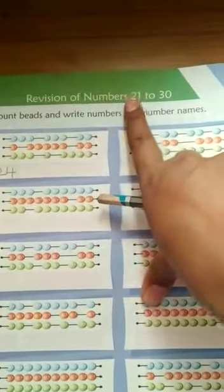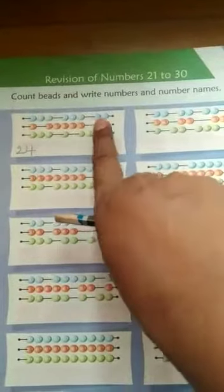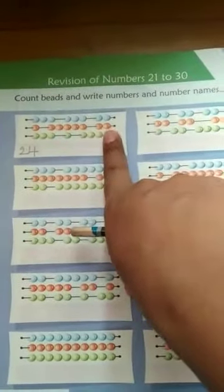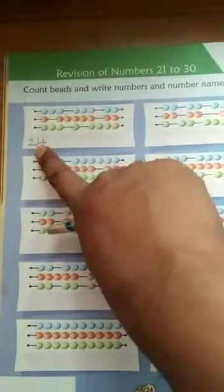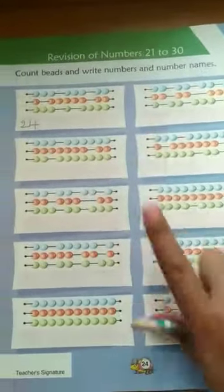Revision of numbers 21 to 30. Just count the beads here, how many beads you can see and write the number here. Not to write the number name since you have not learned the number names.